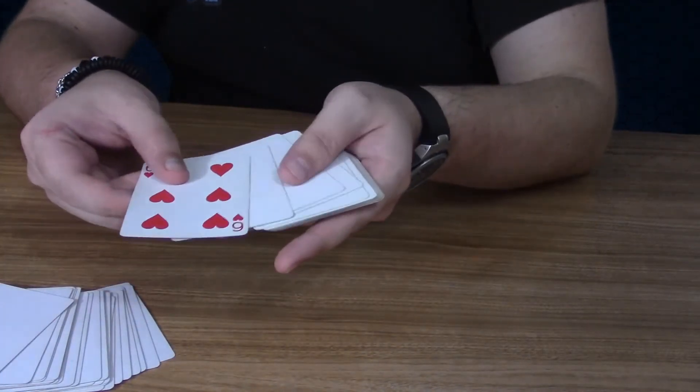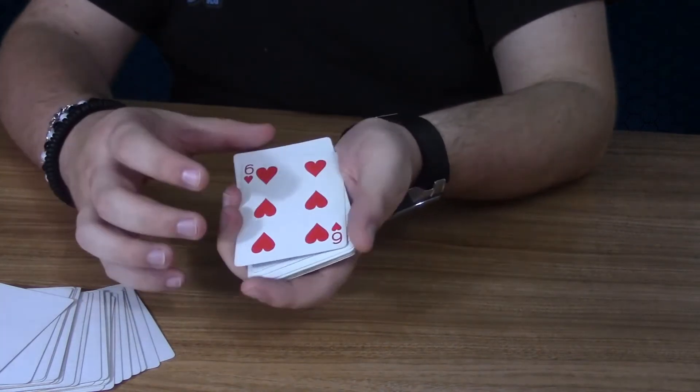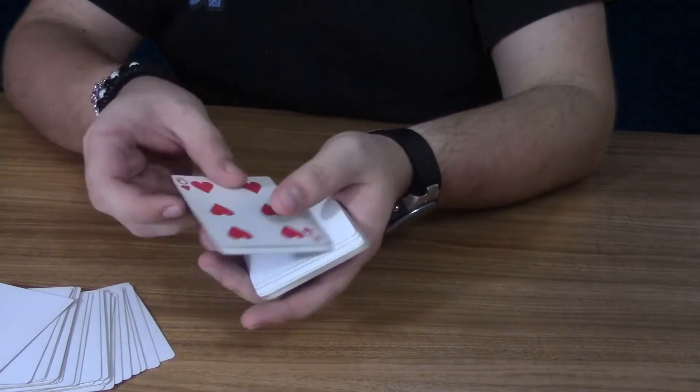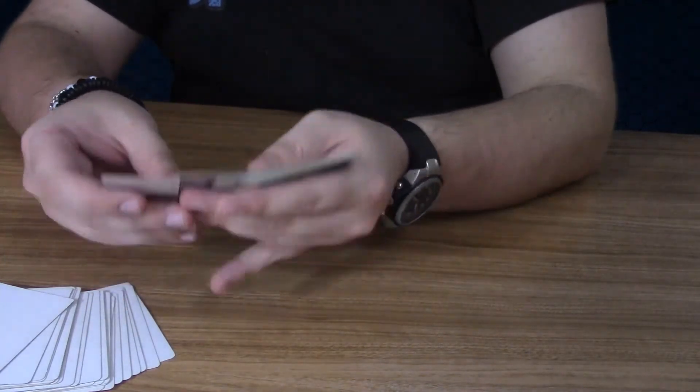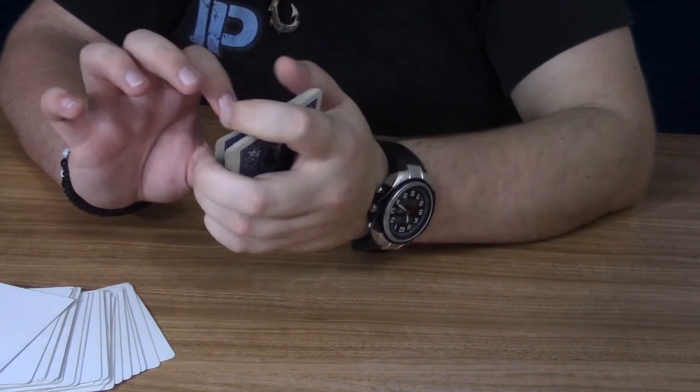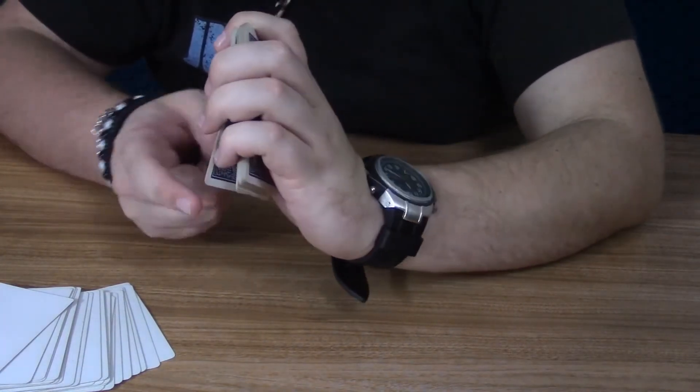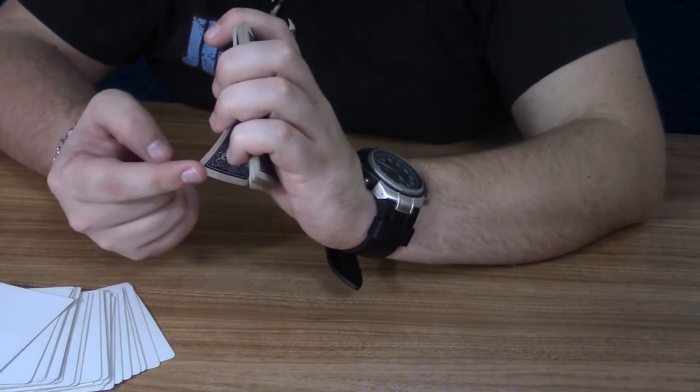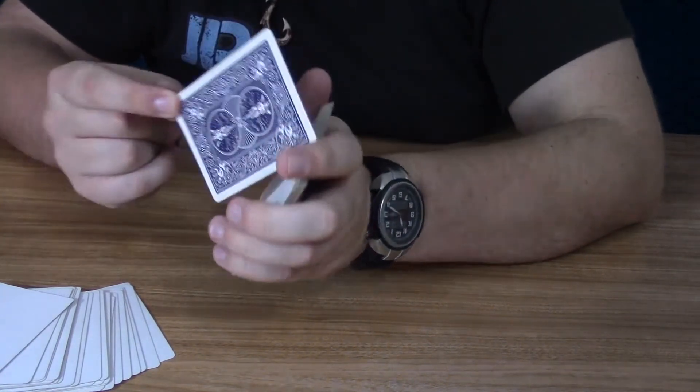But then you're just going to do what's called a double lift. You're going to take two cards and flip it over as one so it looks like one card. And what I do is I push off and then put my pinky right there to do a pinky break. So there's a little break right here that separates from the rest of the pile.